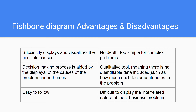Advantages and disadvantages of the fishbone diagram: the first advantage is that it succinctly displays and visualizes the possible causes, which can be very helpful when you want a clear picture of what's going on in the business. A disadvantage, on the other hand, is that there's not a lot of depth — it's too simple for big and complex business problems as you usually have them in real life.